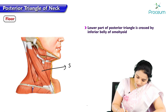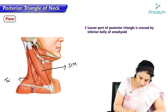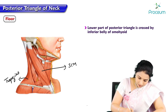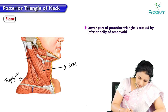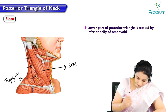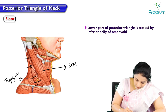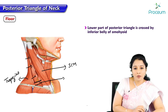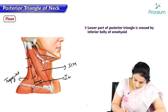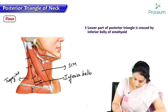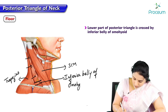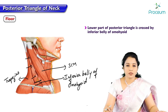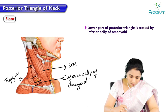We can see the sternocleidomastoid on one side and trapezius on the other, with the muscles forming the floor — splenius capitis, levator scapulae, scalenus medius. The muscle crossing and dividing the posterior triangle into two smaller triangles is the inferior belly of omohyoid.